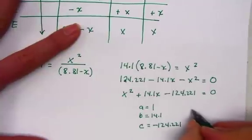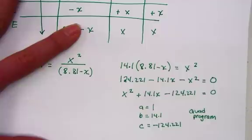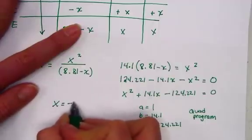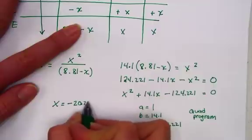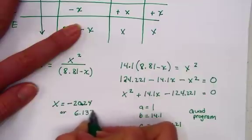Let's hit the quadratic program and find the values for x. On our calculator, hitting for program, selecting your quadratic equation. The value for a is 1, the value for b, 14.1, the value for c, negative 124.221. The two values for x come out to be negative 20.238 or positive 6.138.